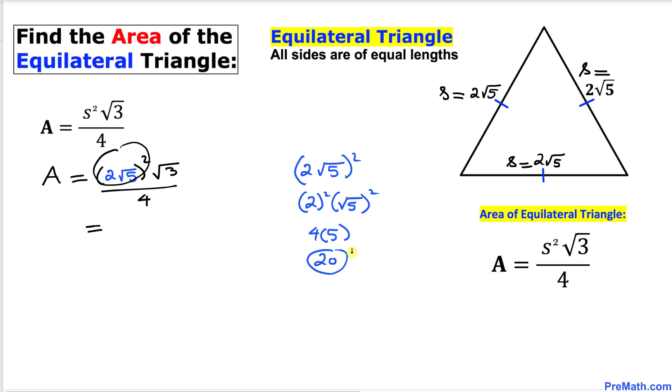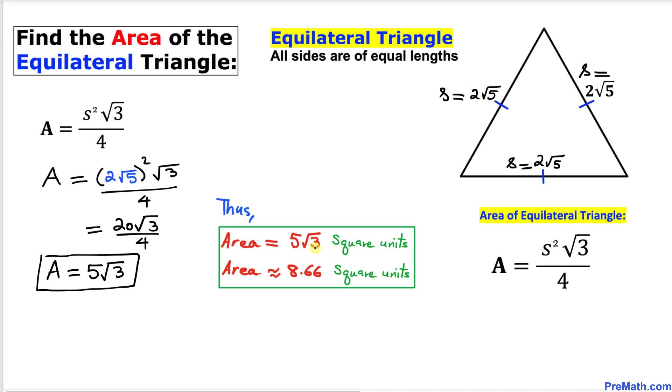This part has been simplified to 20, so I can write 20 times square root of 3 divided by 4. Thus the area turns out to be 5 times square root of 3 square units.